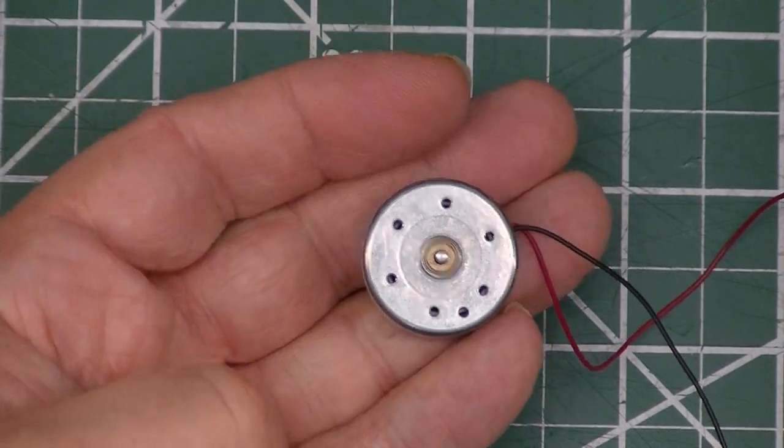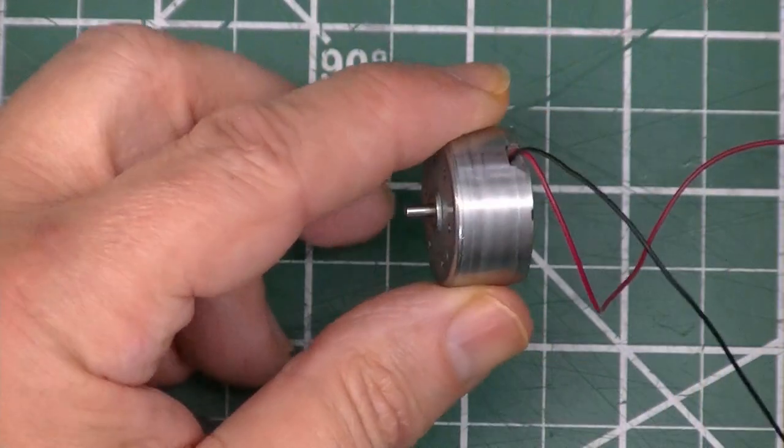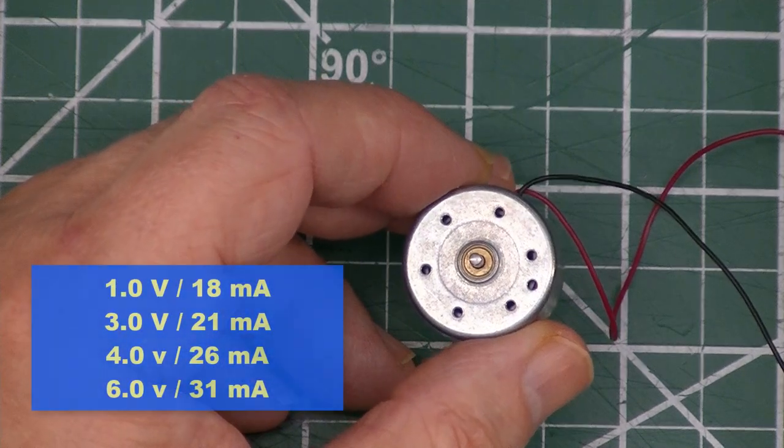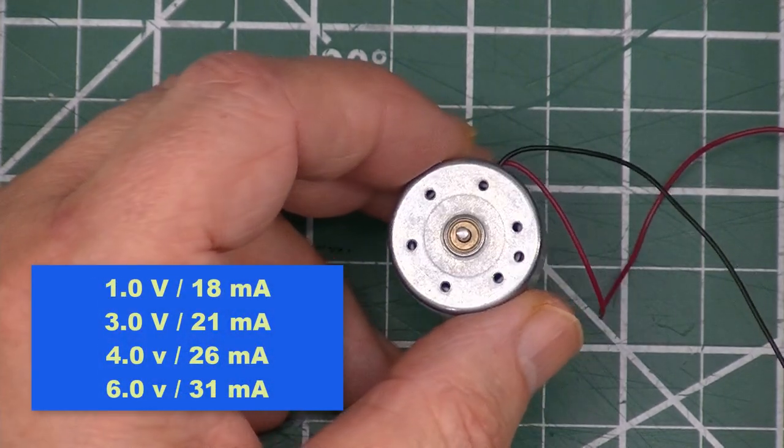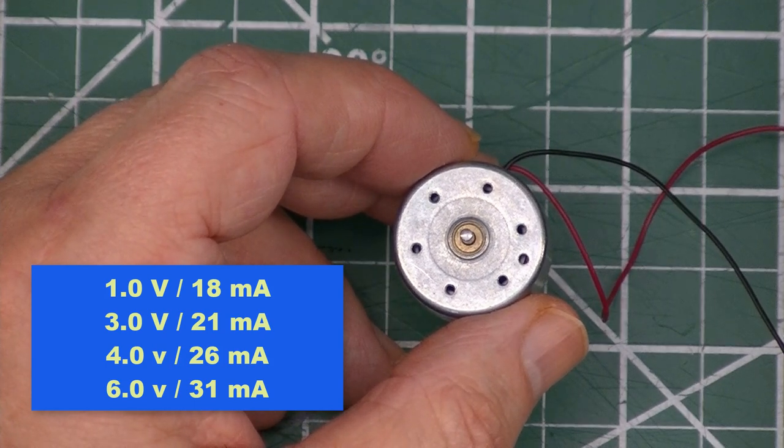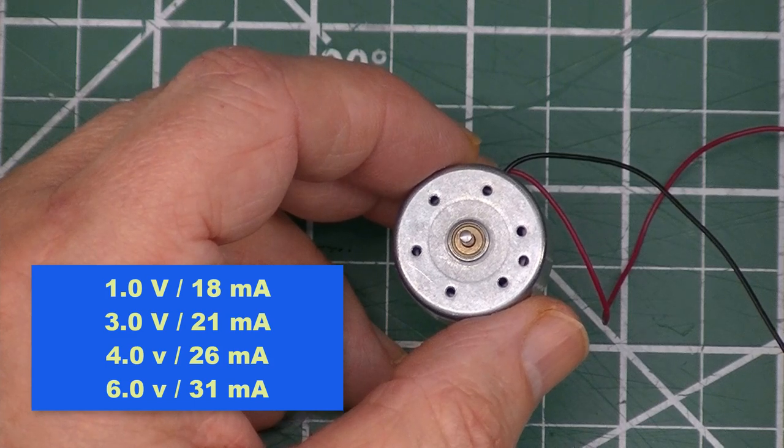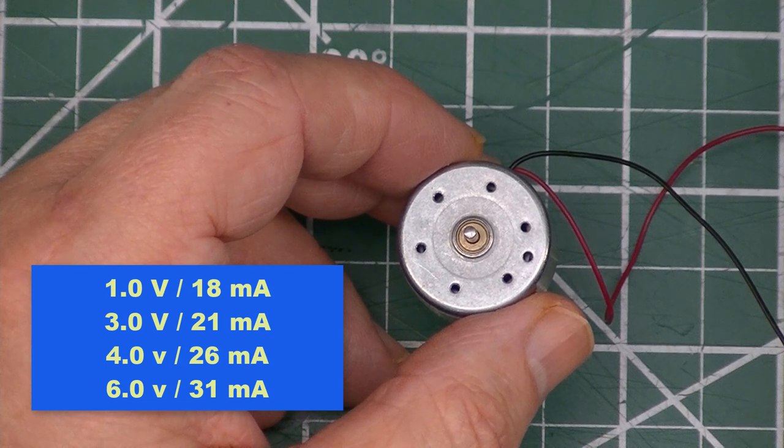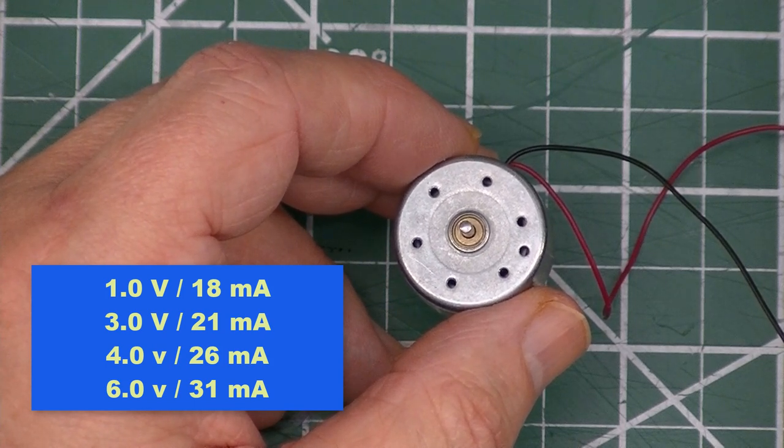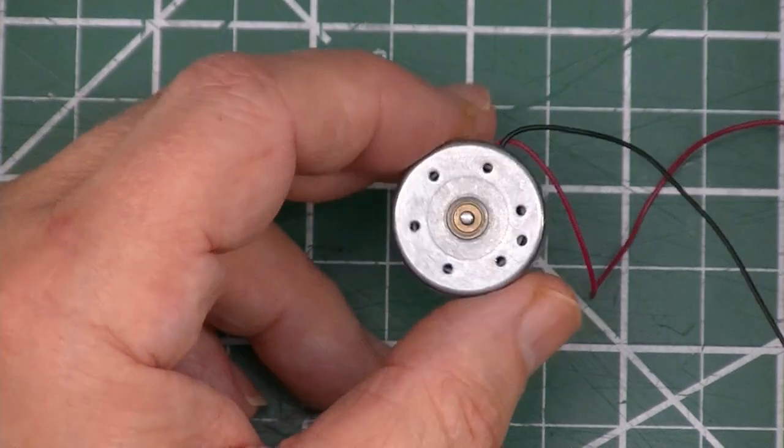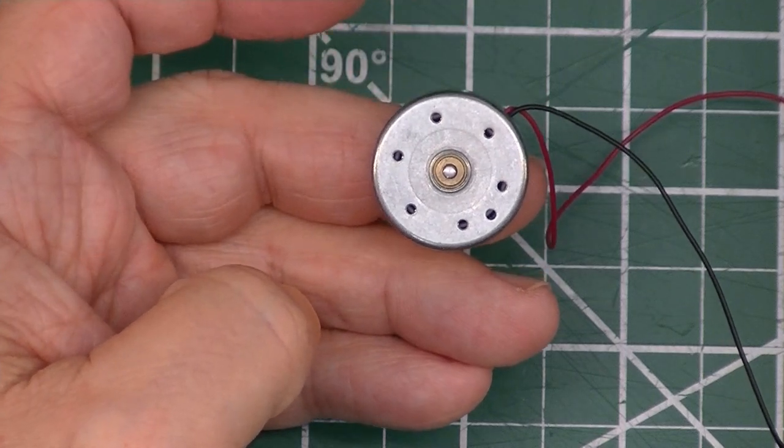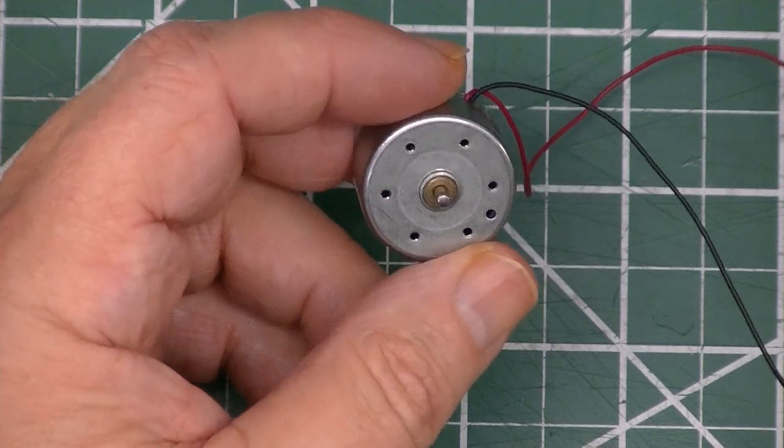This is the YG300R solar motor as they call it, a fairly thin motor. It runs anywhere from 1 volt all the way up to 6 volts. At 1 volt it's drawing 18 milliamps. It doesn't make a lot of noise, it's hard to hear it above the regular lab noise. I'm at 3 volts and 21 milliamps. At 4 volts, 26 milliamps. And at 6 volts I got 31 milliamps. Very little vibration. Surprising. This thing is spinning at 5,500 RPM and it's almost impossible to tell it's running.